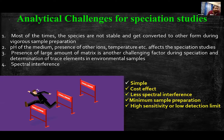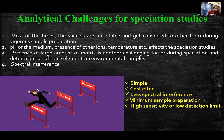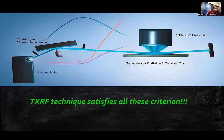An ideal technique for speciation studies should be simple and cost-effective, have less spectral interference, require minimum sample preparation, and have very high sensitivity or low detection limits so speciation can be done at ultra-trace levels. The TXRF technique satisfies all these criteria, and that is why it has been routinely used for speciation studies of different types of environmental samples.